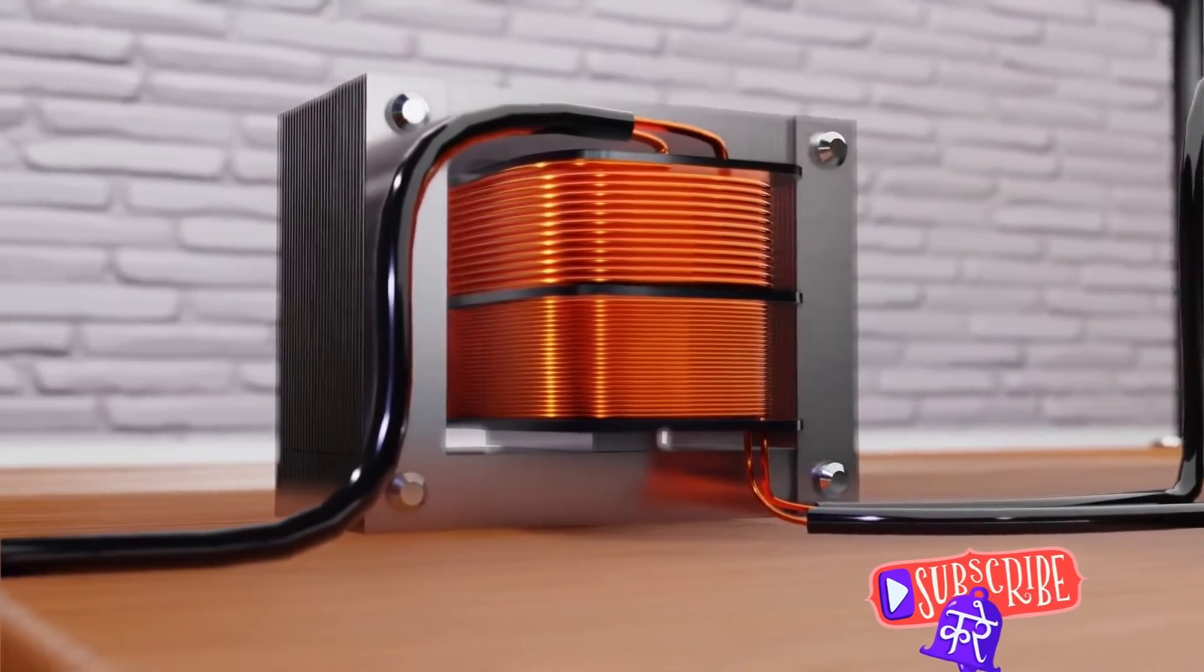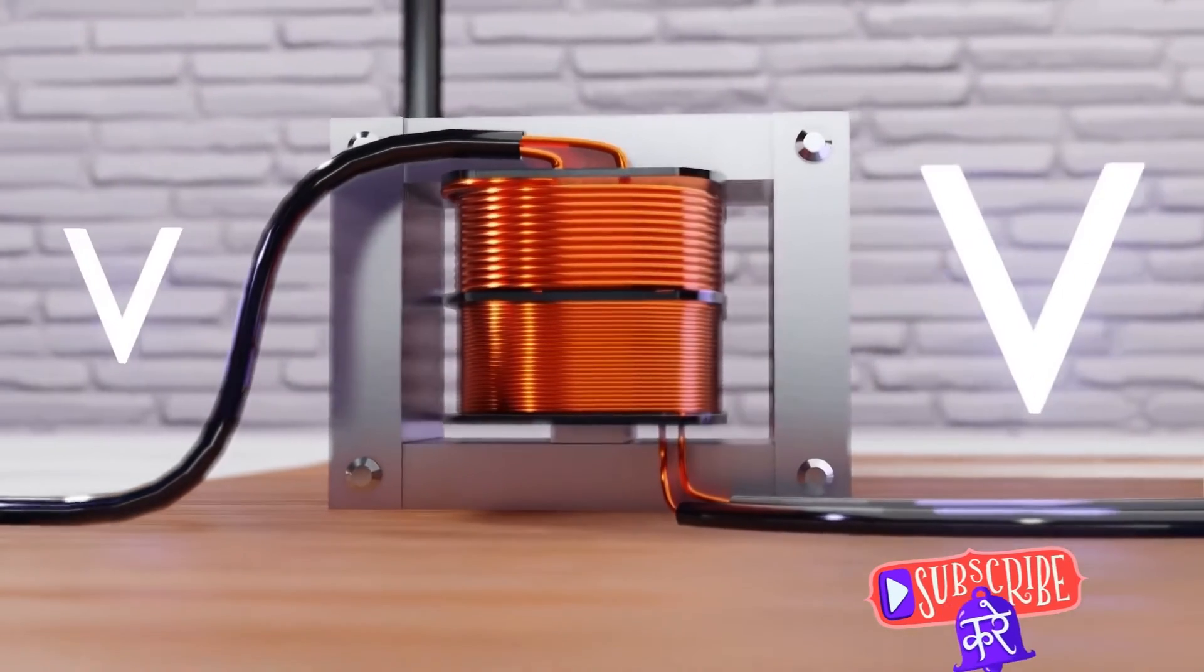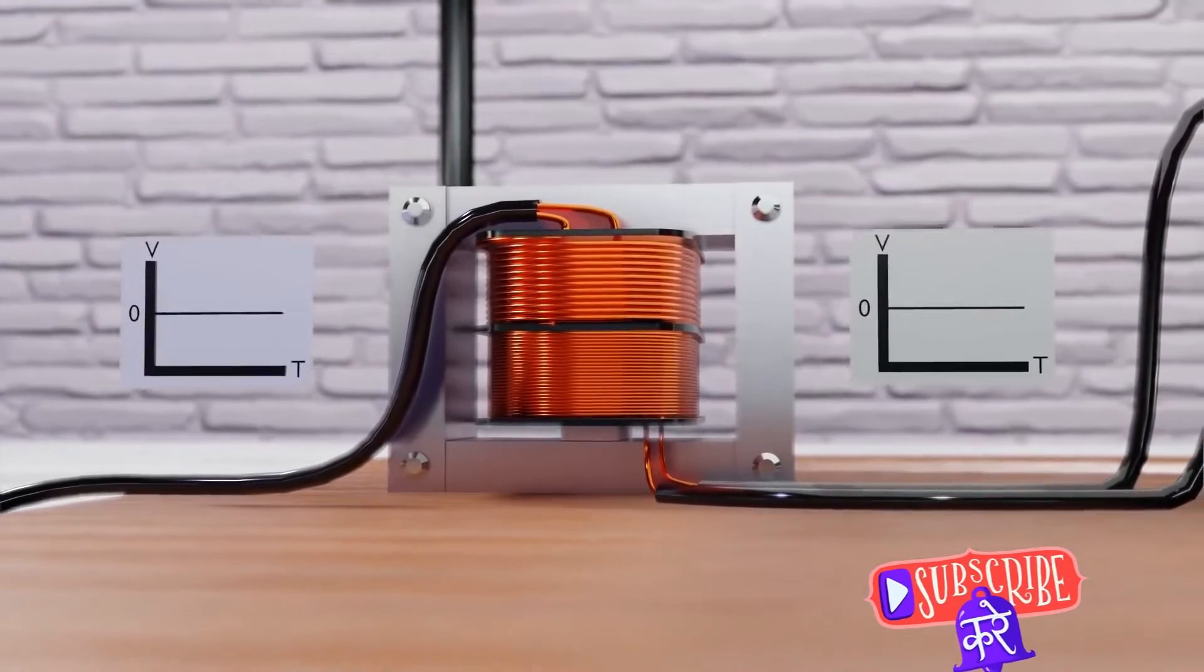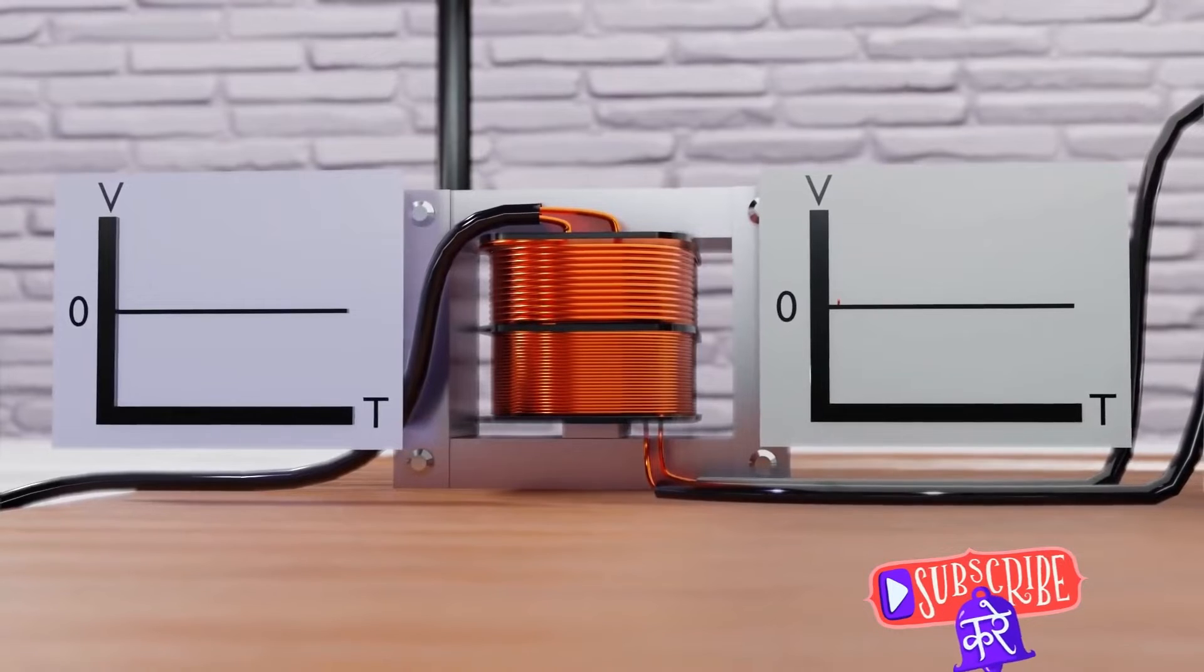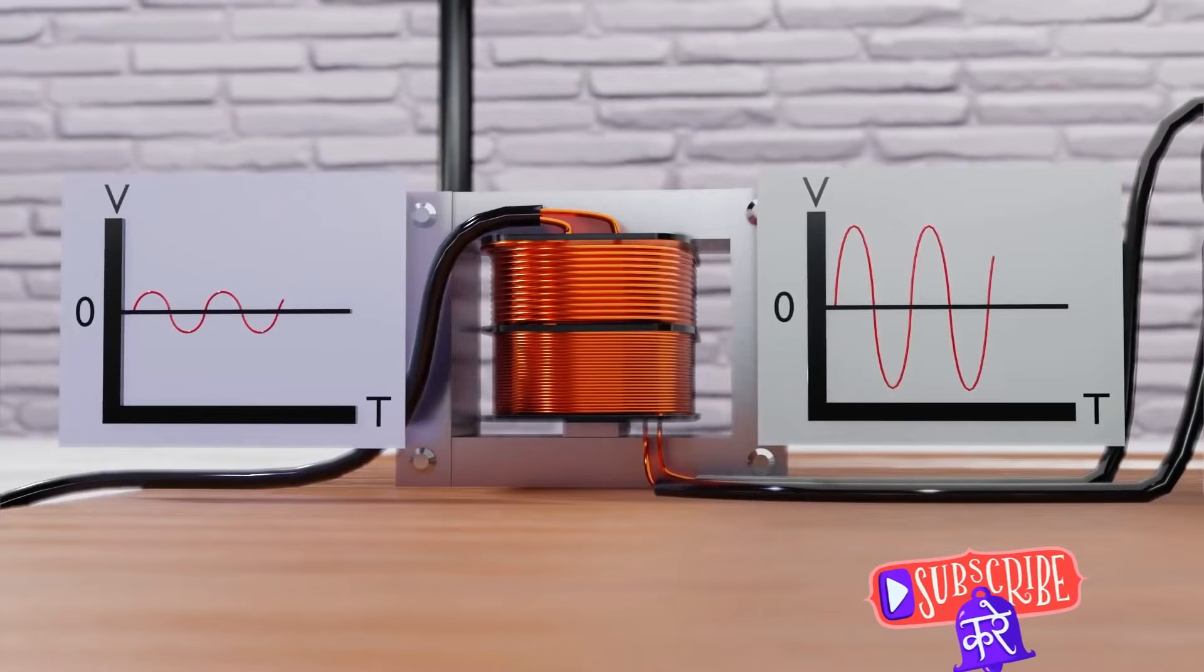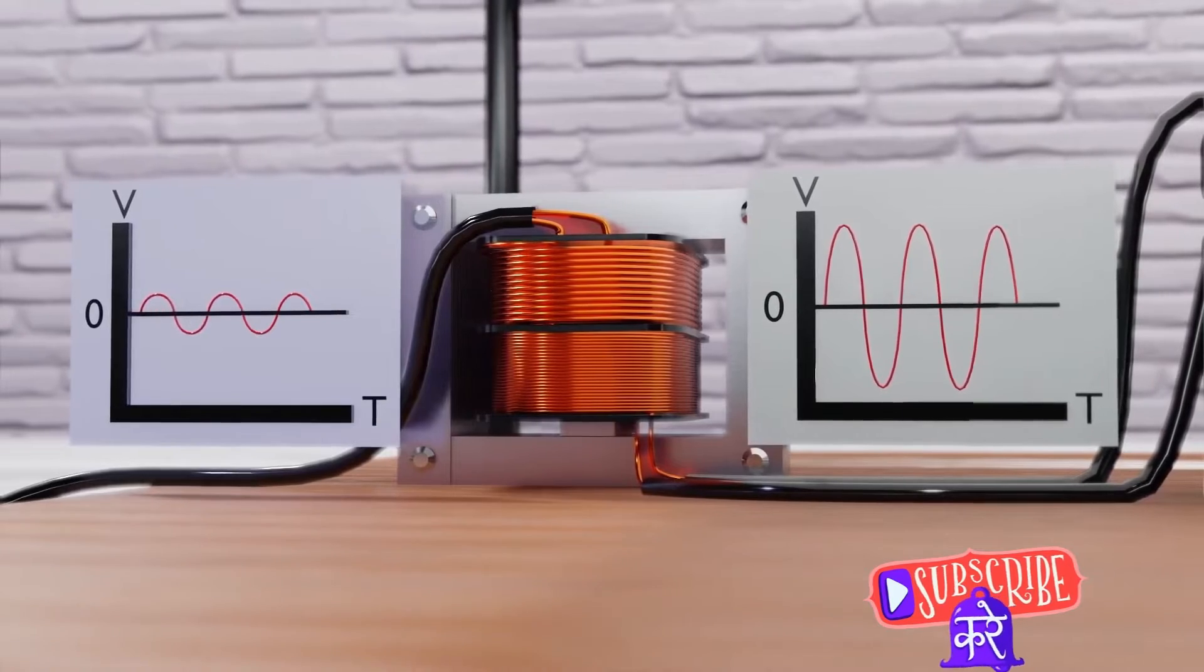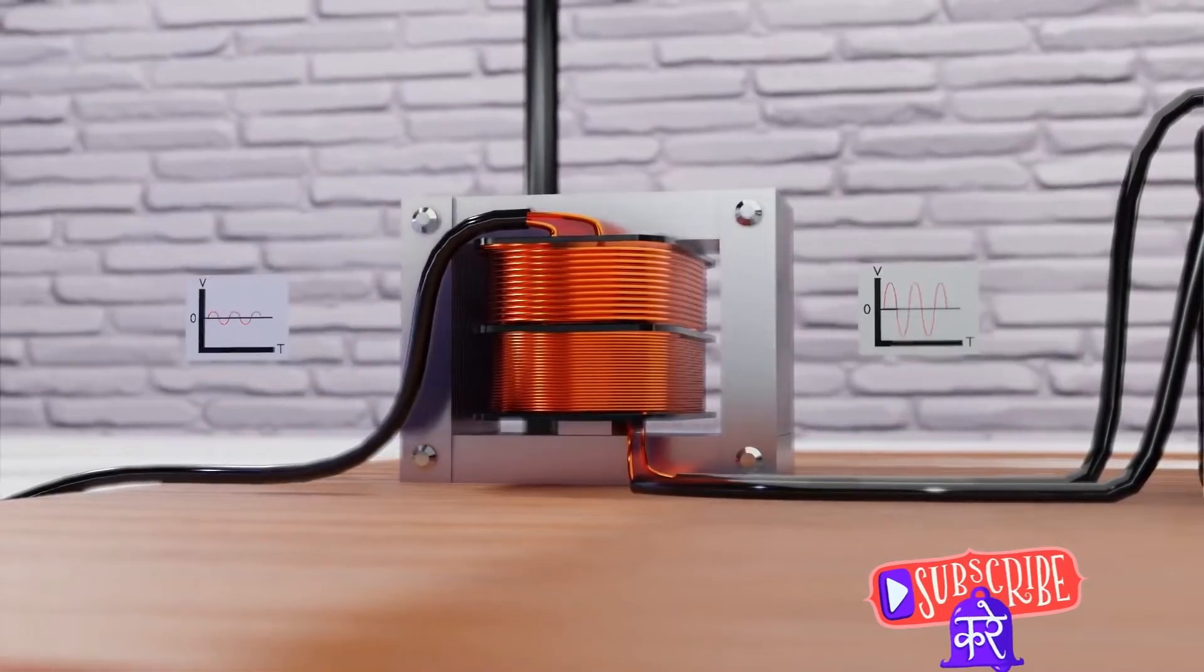The second step is all about the toroidal core. Imagine the toroidal core as the heart of the transformer, pumping magnetic energy from the primary winding to the secondary winding. When the primary winding is energized, it creates a magnetic field that envelops the toroidal core. This magnetic field induces a similar magnetic field in the toroidal core, a phenomenon known as magnetic induction.